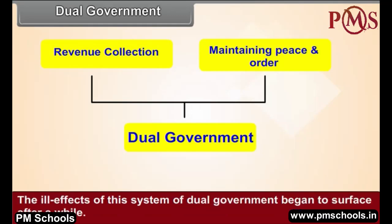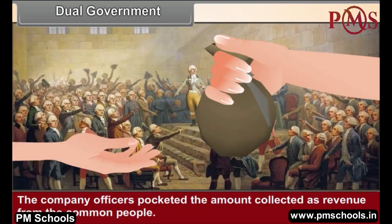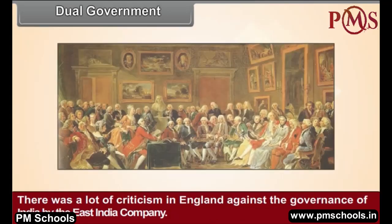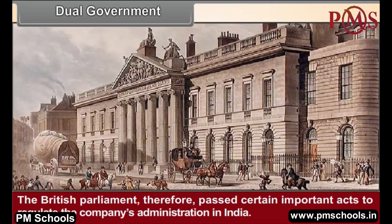The ill effects of this system of dual government began to surface after a while. Company officers pocketed the amount collected as revenue from the common people. Many British merchants were envious of the East India Company as it had been granted the monopoly of trade with India. There was a lot of criticism in England, and the British Parliament passed certain important acts to regulate the company's administration in India.